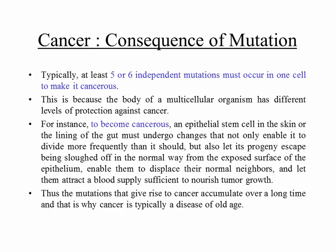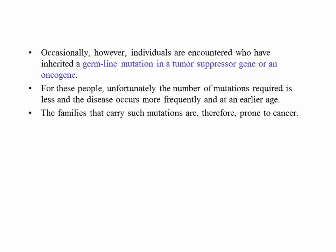Occasionally, individuals inherit a germline mutation in a tumor suppressor gene or oncogene. If one copy is already mutated, it takes far fewer additional mutations to get full-blown cancer. For these people, the disease occurs more frequently at an earlier age, and families carrying such mutations are prone to cancer. For example, inherited mutations in the retinoblastoma gene cause eye tumors in young children — and similar patterns of inherited cancer predisposition are seen with colon cancer and other cancers that run in families.